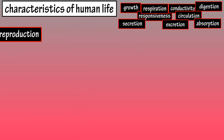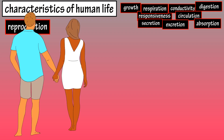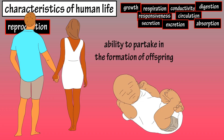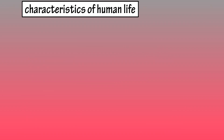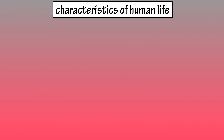Reproduction is the last on the list of the characteristics of life, being the ability to partake in the formation of offspring, as a man and a woman produce a child. And that covers the basics on the characteristics of human life.